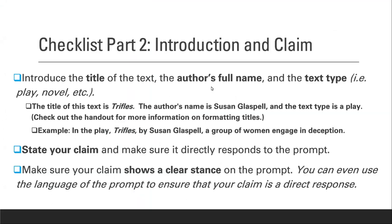Next, you need to make sure that there's an introduction and a claim in your paragraph. When we're dealing with a piece of literature, in that introduction we need to make sure to include all of the important information about that piece of literature. You must always include the title of the text, the author's full name, and the type of the text. The title of the text has to be formatted correctly in MLA formatting — which means the first letter of every word is capitalized, and it's either going to be italicized or in quotation marks.